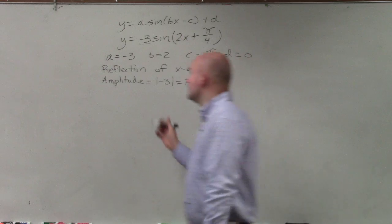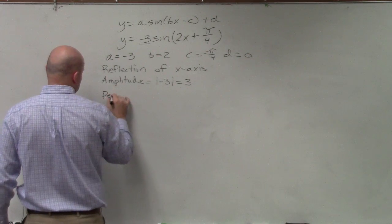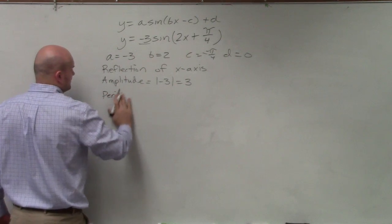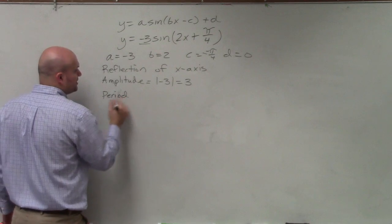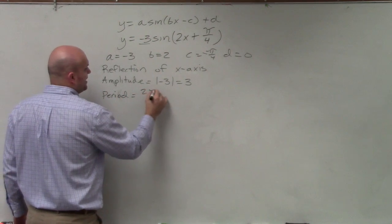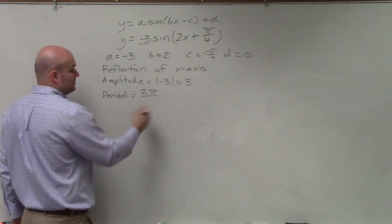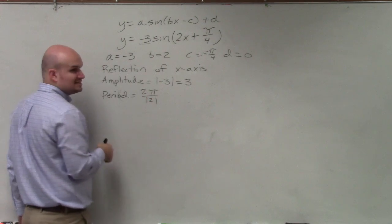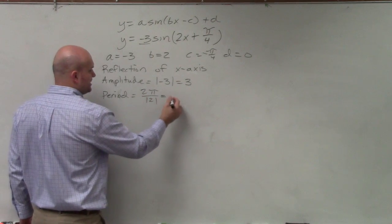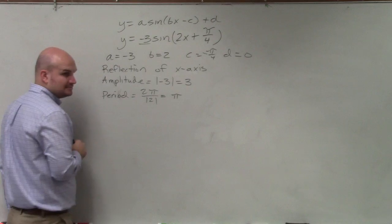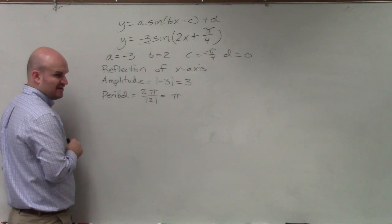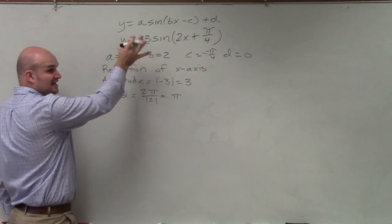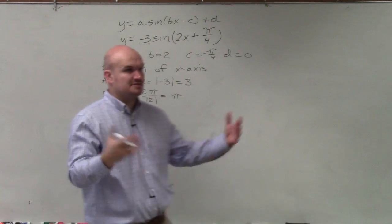The period is simply going to be 2π divided by b, or the absolute value of b, which in this case is the absolute value of 2, which is just going to be π. Does everybody follow? Because the period of sine, cosine, secant, and cosecant is 2π.